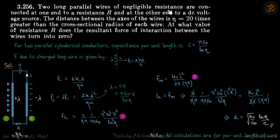Two long parallel wires of negligible resistance are connected at one end to a resistance R and at the other end to a DC voltage source V. The distance between the axes of the wires is eta times greater than the cross-sectional radius of each wire. So if the cross-sectional radius is A, then the distance between them is eta A. At what value of resistance R does the resultant force of interaction between the wires turn into zero?